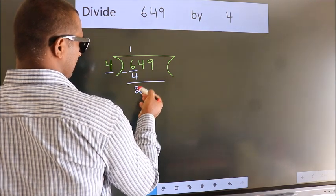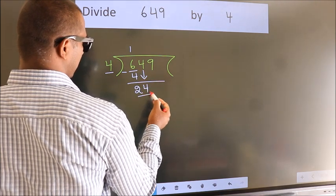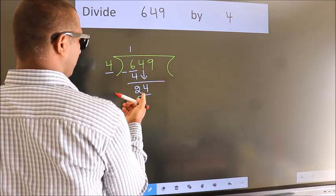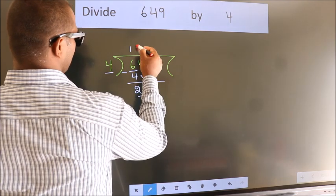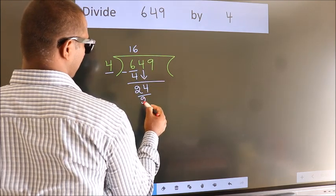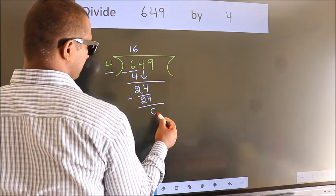After this, bring down the beside number. So 4 down, making 24. When do we get 24 in the 4 table? 4 times 6 is 24. Now we subtract. We get 0.